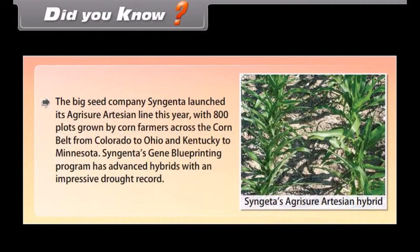Did you know? The big seed company Syngenta launched its Agritio artesian line this year with 800 plots grown by corn farmers across the corn belt from Colorado to Ohio and Kentucky to Minnesota. Syngenta's gene blueprinting program has advanced hybrids with an impressive drought record.